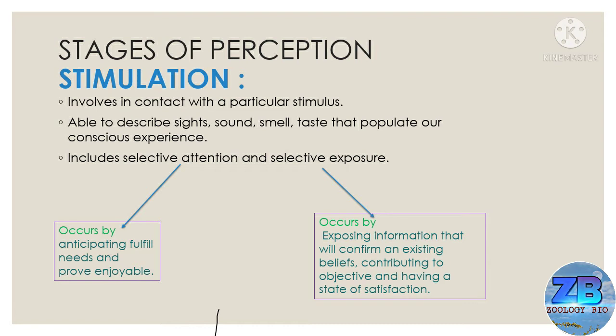The first stage is stimulation — the occurrence of sensory stimulation. This part of the perception process involves contact with a particular stimulus. The world is full of stimuli that attract our attention through various senses, including sight, sound, smell, and taste. Stimulation includes selective attention and selective exposure. Selective attention occurs by anticipating fulfilled needs. For example, friends may be talking to you, but if you are daydreaming, you won't hear what they are saying until they call your name.